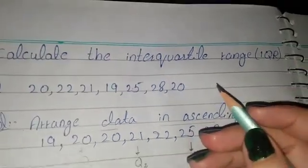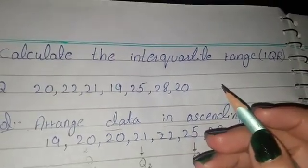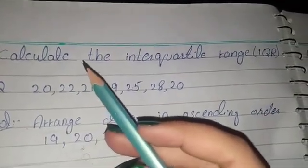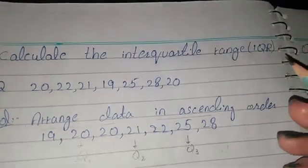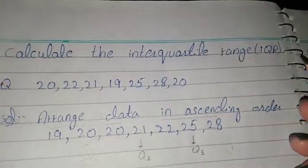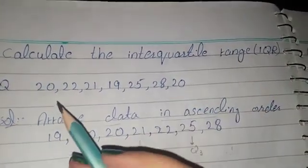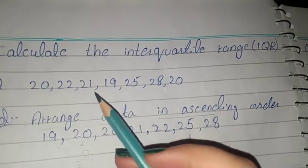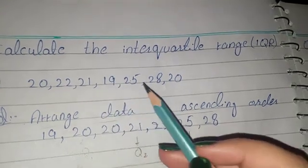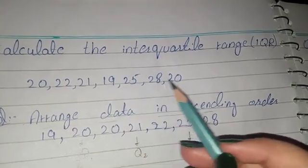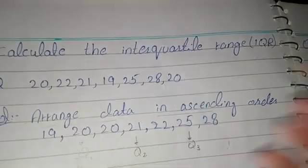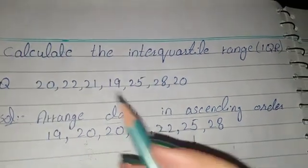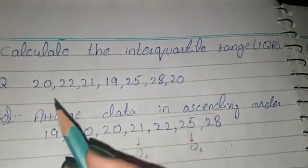Welcome to my class channel. In this video we will discuss this question: calculate the interquartile range (IQR). The data is 20, 22, 21, 19, 25, 28, and 20. First of all, we will arrange the given data.